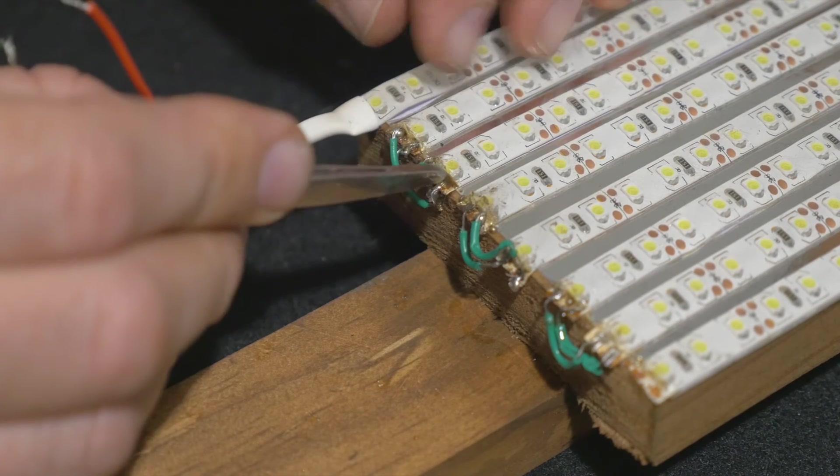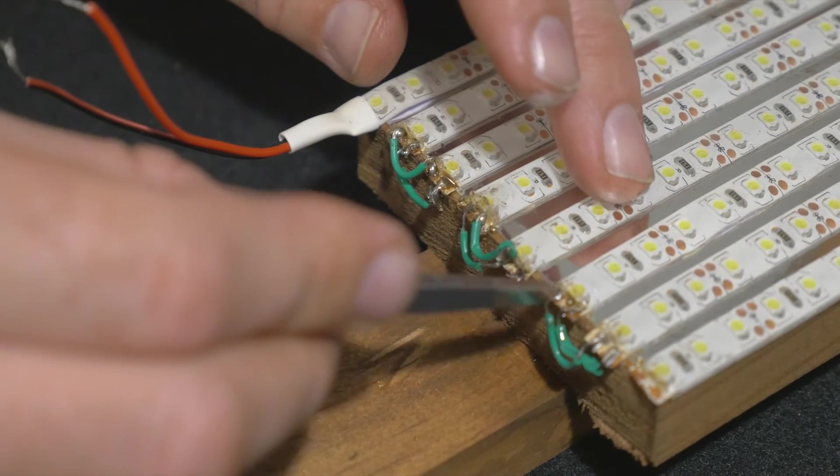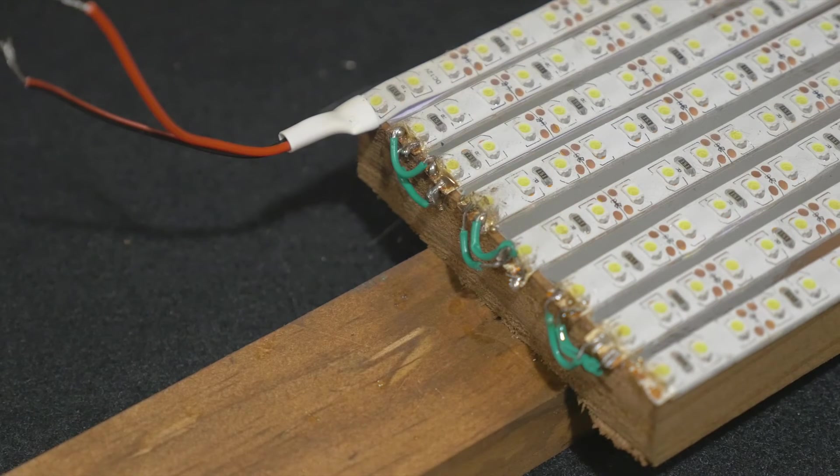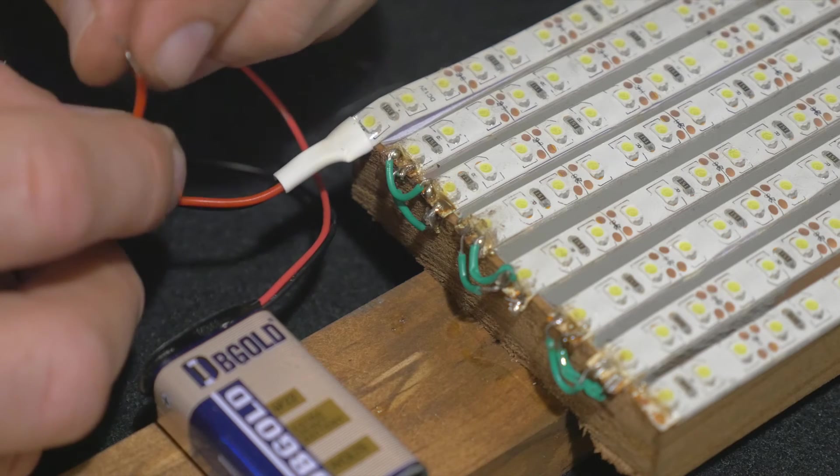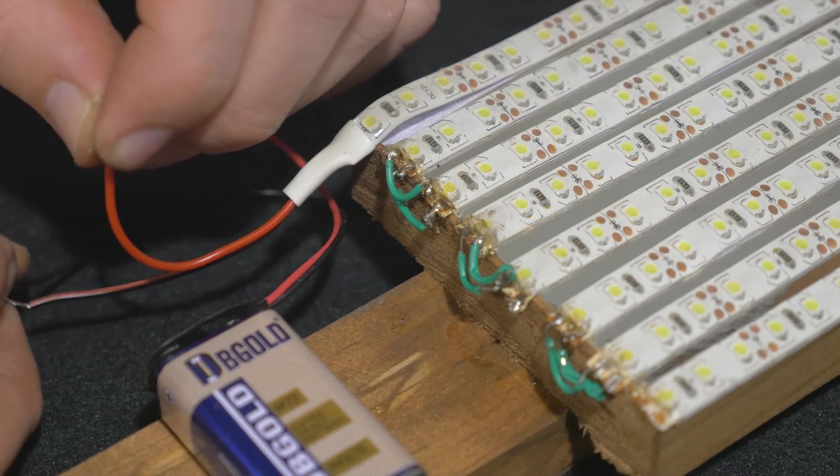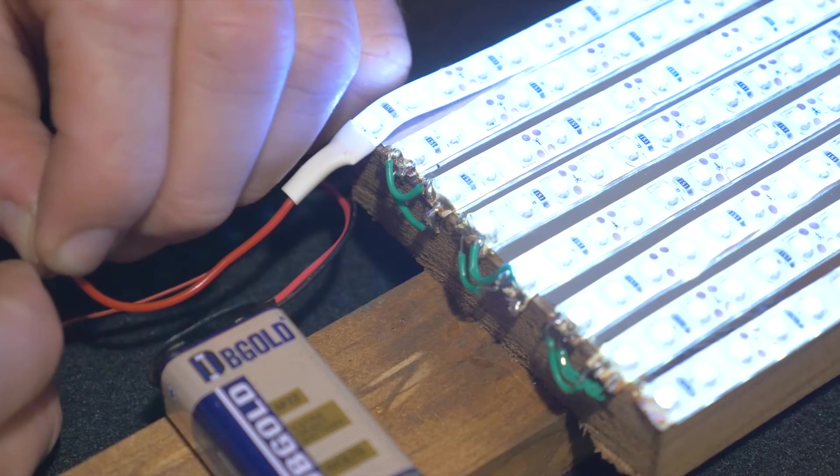As you can see it goes from one, skips to the next, skips to the next. So it's simply a continuous line. If I was to pull it off the face plate, it'll be in one continuous line still. I'm going to use the nine volt now just to make sure it's all connected properly.